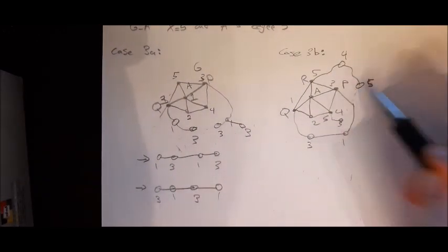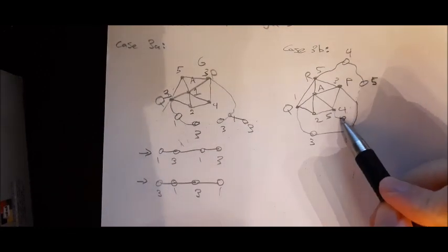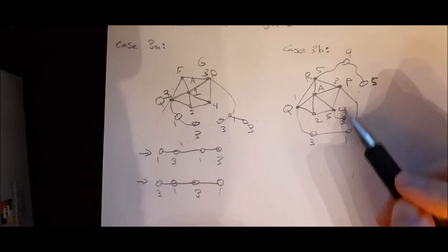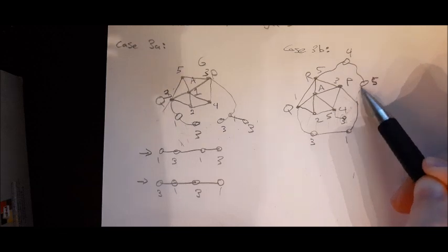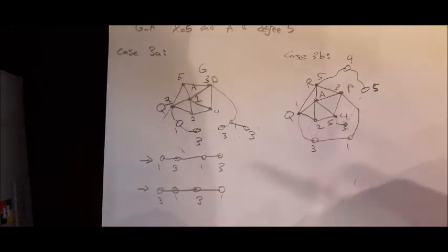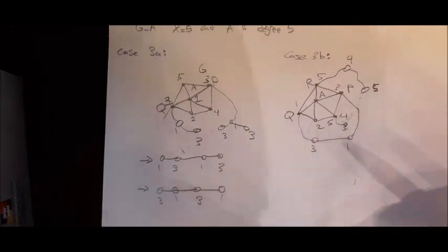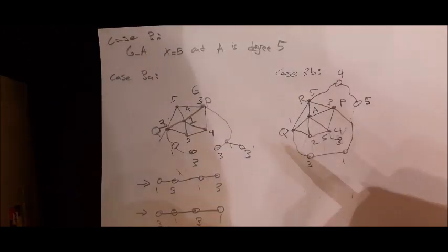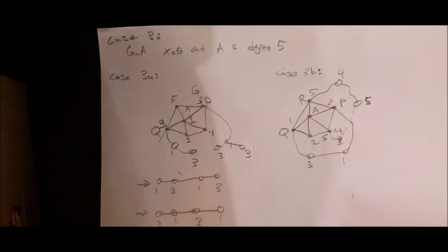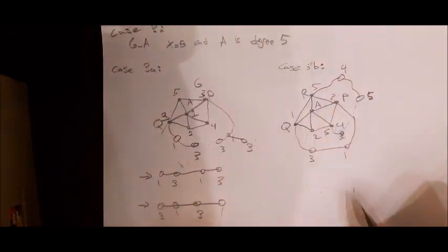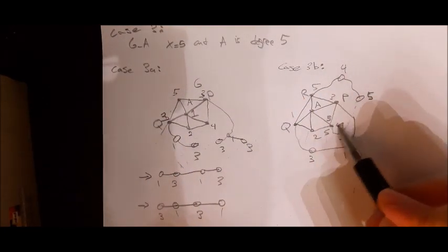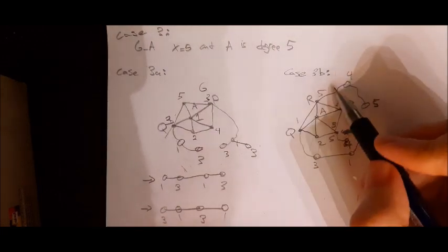This connection is impossible: R lies inside the closed region formed by the one-three walk from P to Q through A, while S lies outside. Connecting R and S would require crossing that boundary, violating the planarity of the graph. Since the graph is planar, R and S cannot be connected by such a walk. We can therefore flip the four-five walk at R, leaving color four unused among A's neighbors, and color A with four — completing the proof.